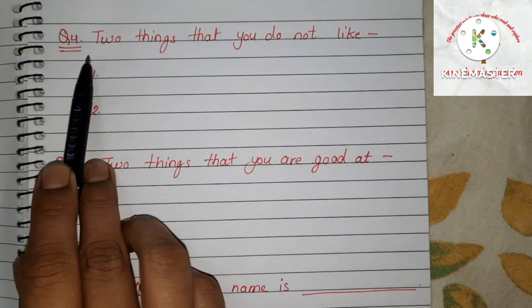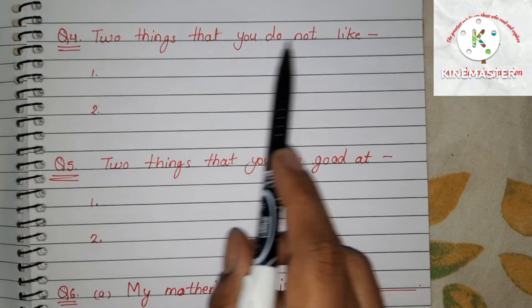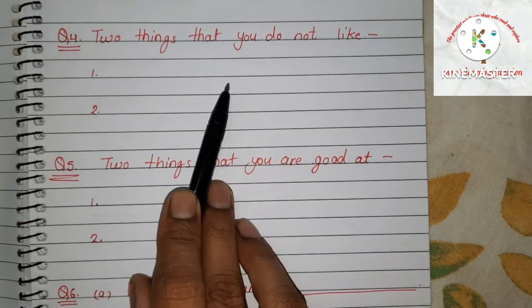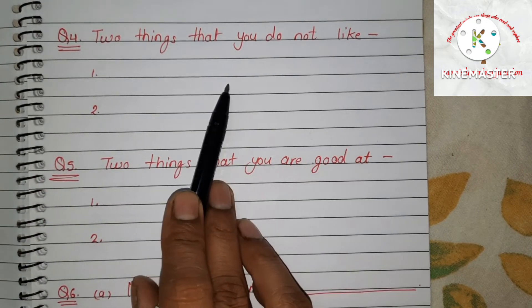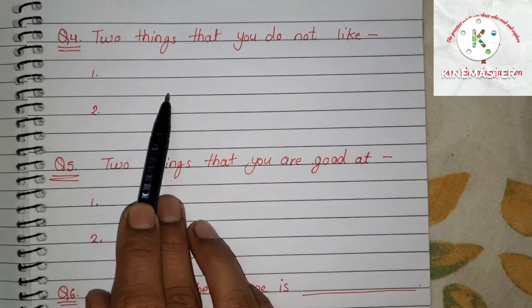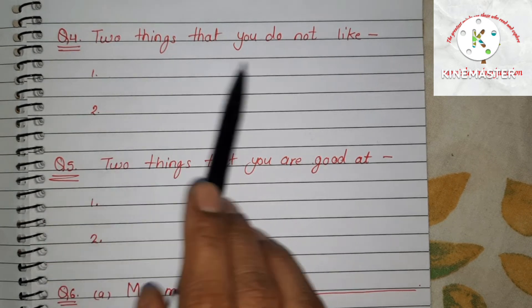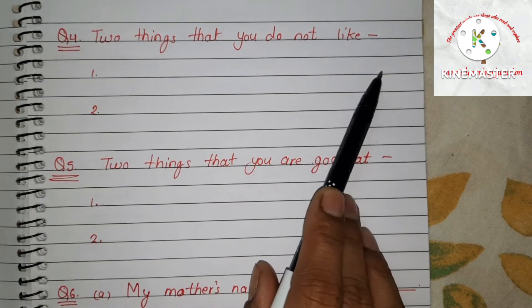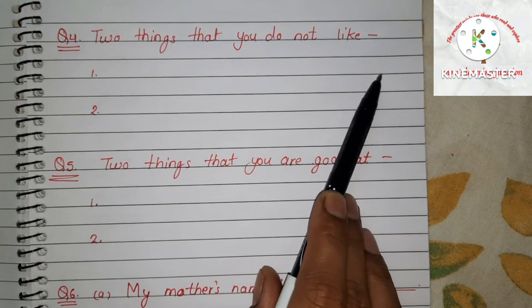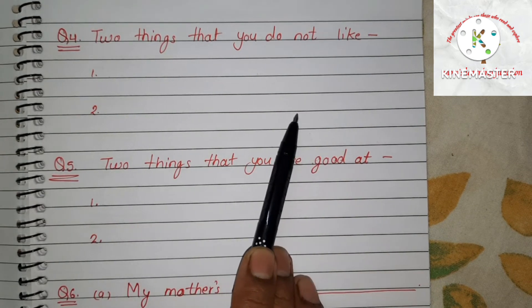Question number 4: two things that you do not like. Here the child has to write two things that he dislikes. It may be like 'I do not like eating vegetables' or 'I do not like crying.'